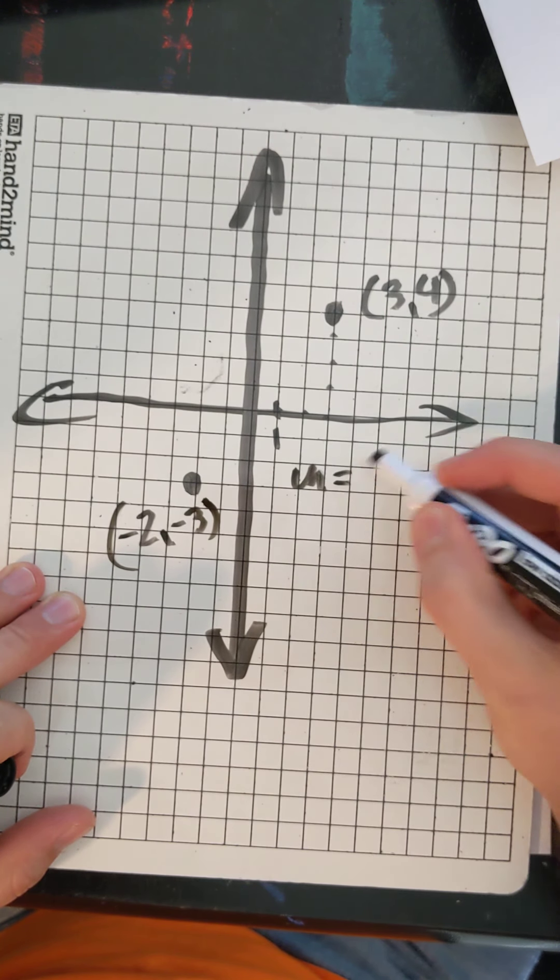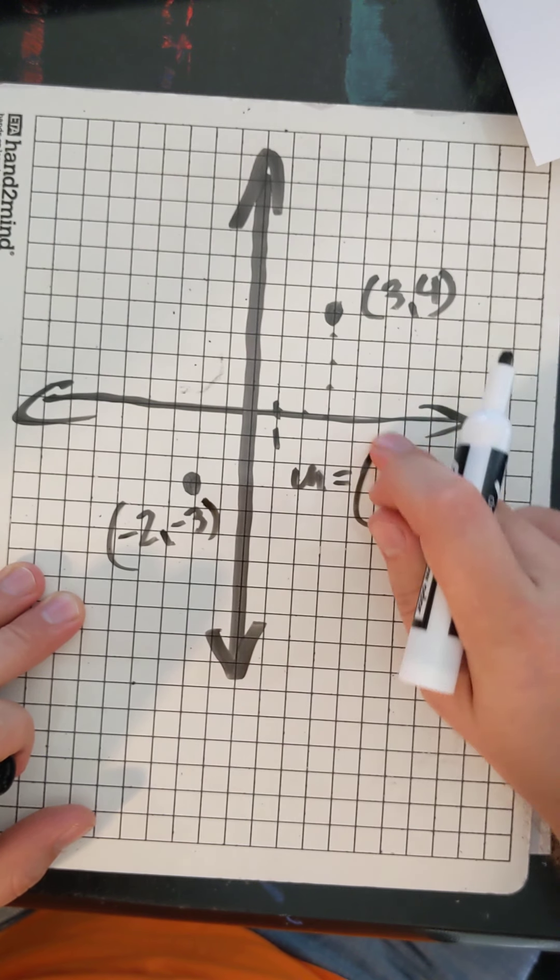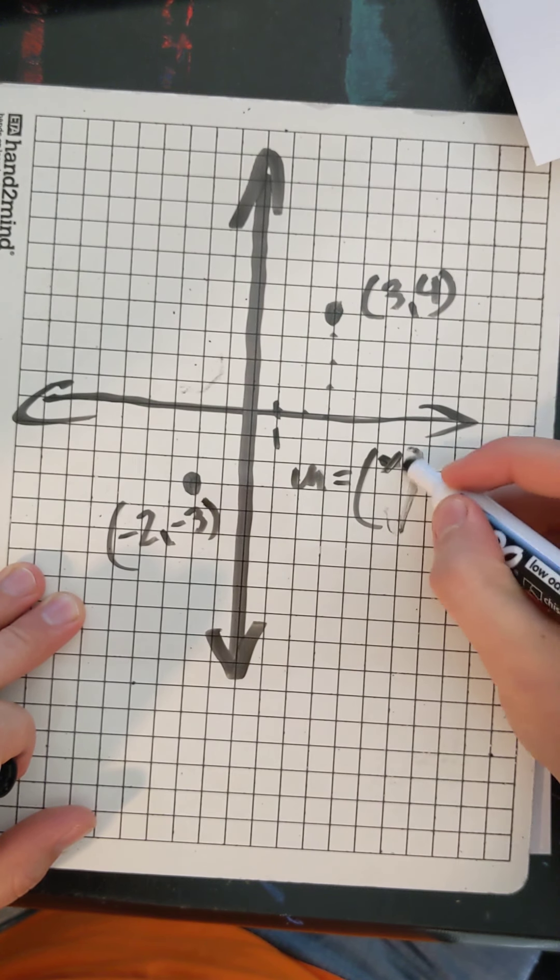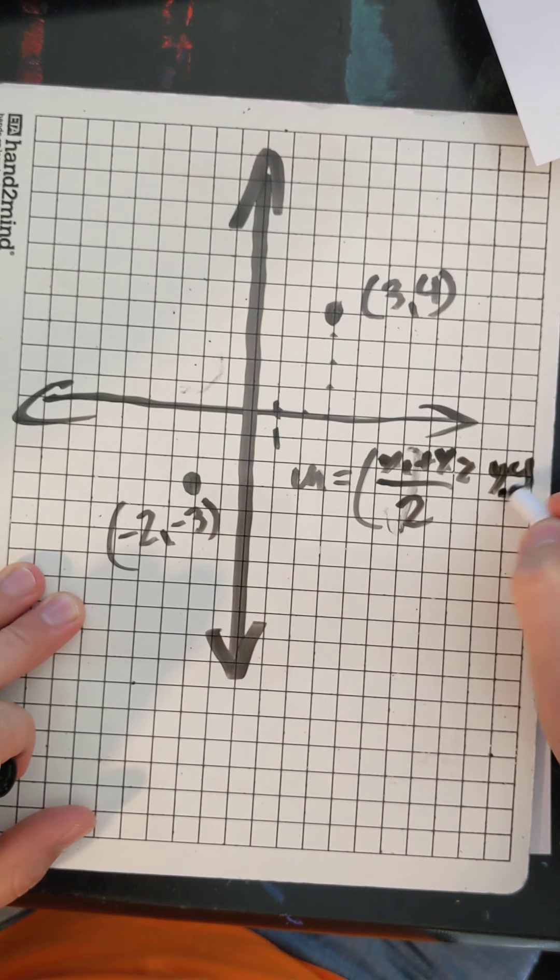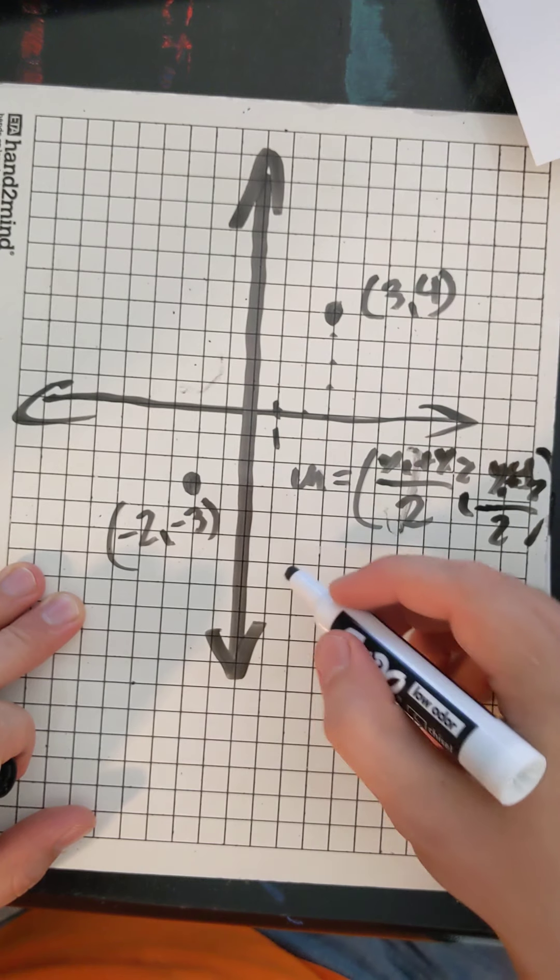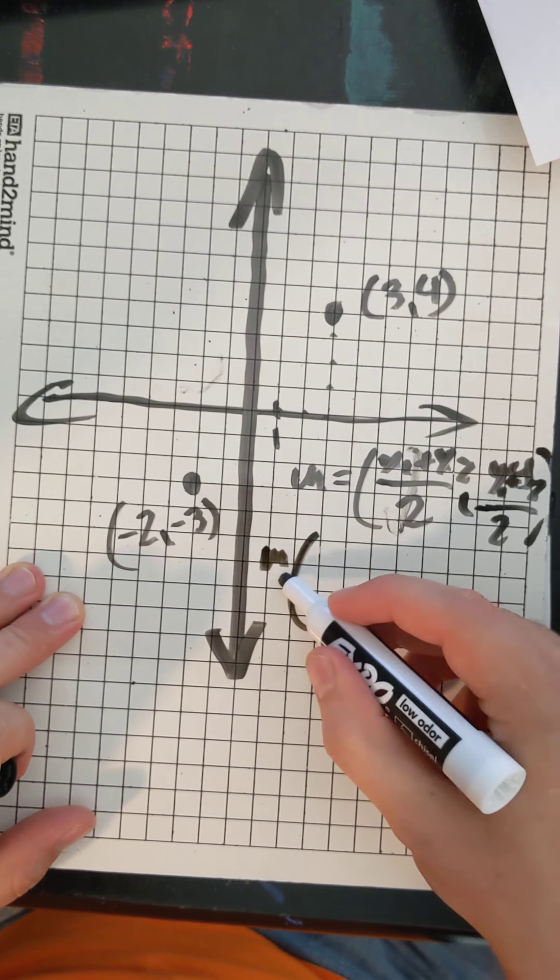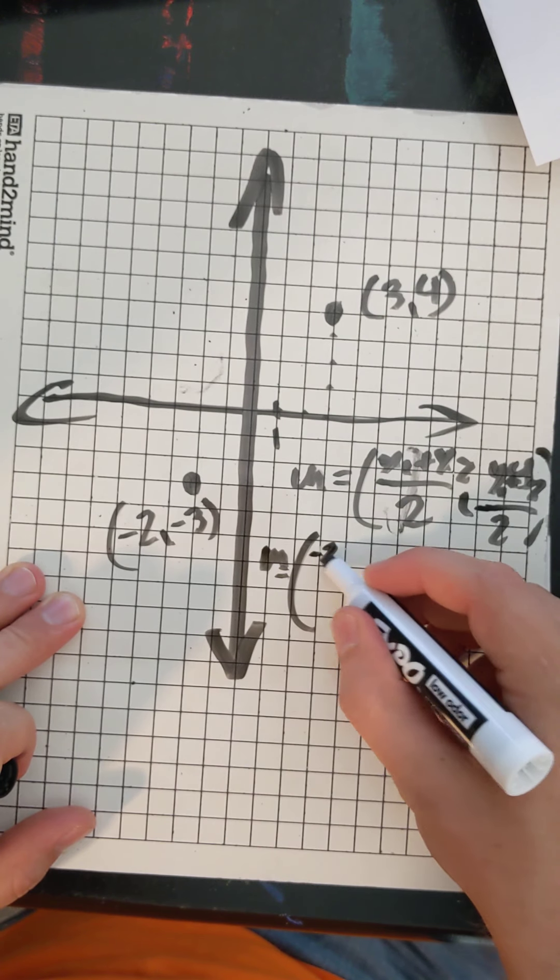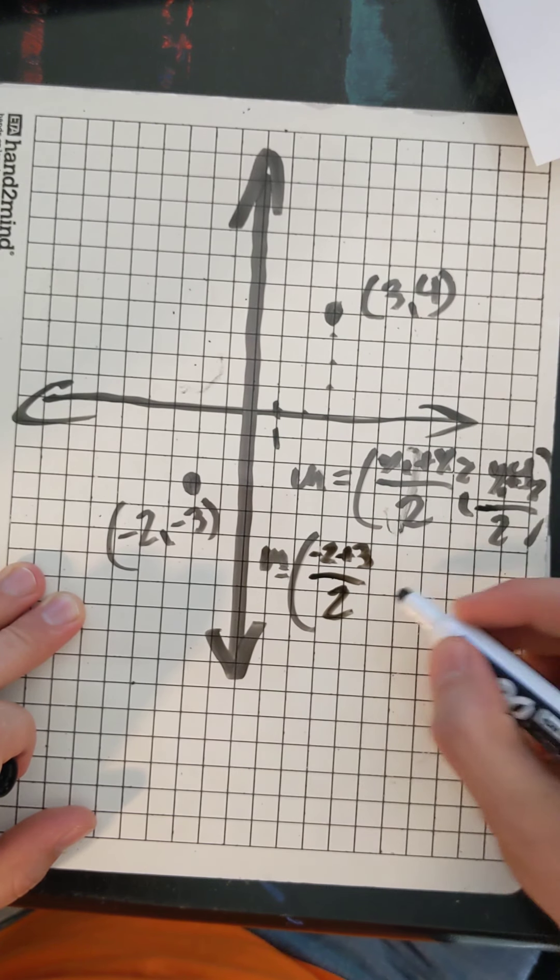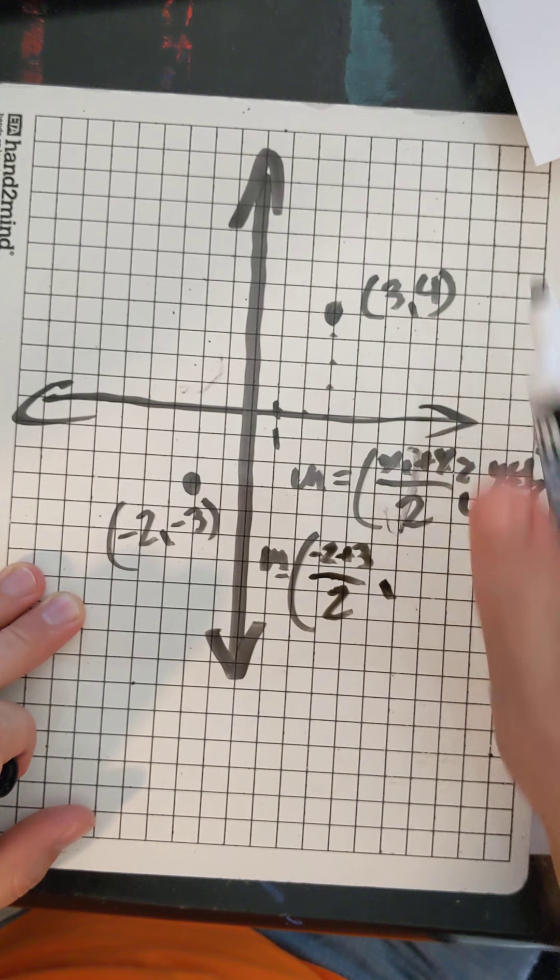Okay. If I'm using the same formula. Oops. X's come first. Adding divided by 2. Then I'll have my two x values. Negative 2 and 3. And my two y values. Negative 3 and 4.